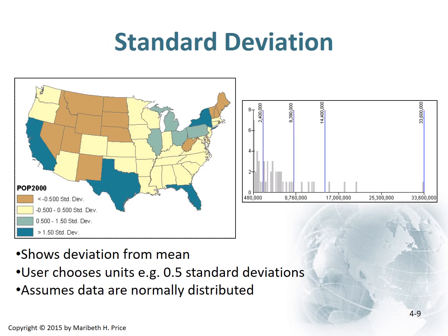Standard deviation shows the deviation from the mean. You pick the units. It assumes that your data is normally distributed — it usually isn't — and then it tries to fit that.